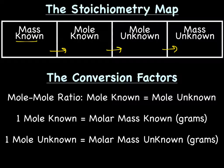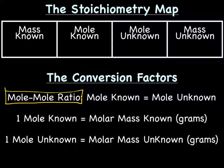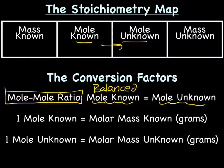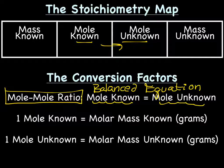We have three potential conversion factors for today. The first one is called the mole-mole ratio. We use the mole-mole ratio when going from mole known to mole unknown on the map. Remember, the numbers for the mole-mole ratio come from the balanced equation—you're going to use the coefficients with the unit mole from the balanced equation.